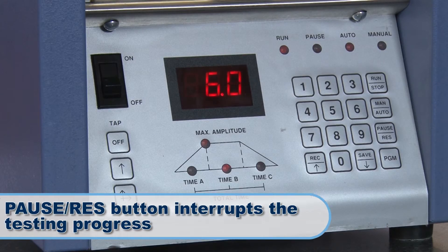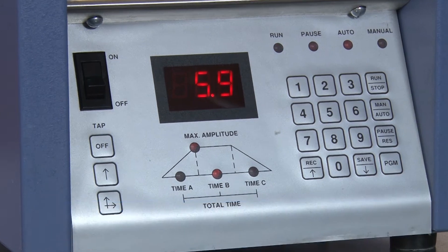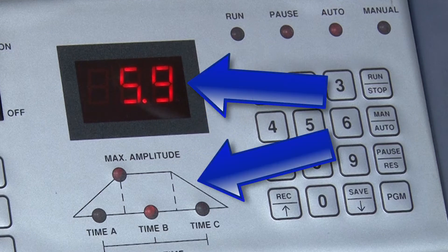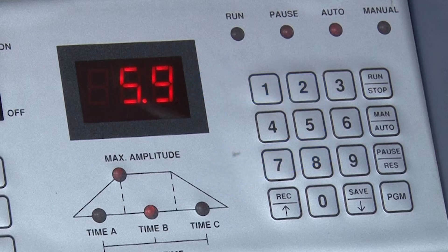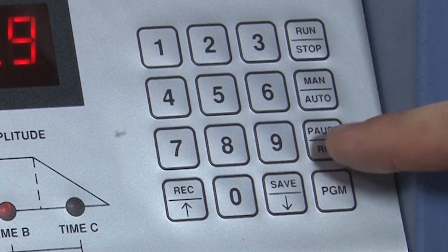The Pause Resume button interrupts the testing progress. The Pause LED light is lit when this function is activated. When a test is paused, remaining time and sequence position will be indicated on the control panel. Press the Pause Resume button a second time to resume operation.